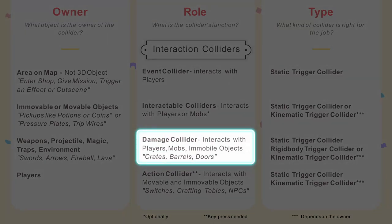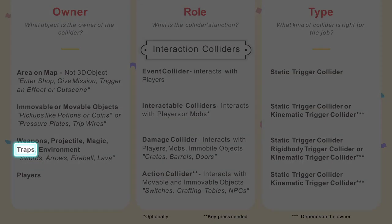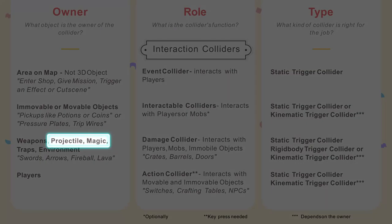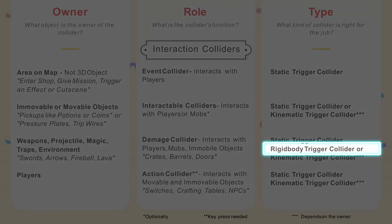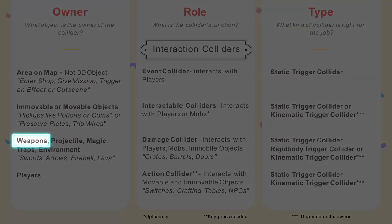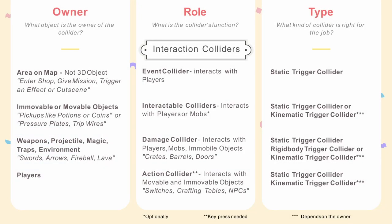Damage colliders interact with movable and immovable objects like players or mobs, but could also affect crates or even doors. They are attached to spike traps and can be static trigger colliders, or moving traps — missiles, fireballs — which are kinematic trigger colliders. If you want physics to affect your missiles, rigid body colliders could also be used. Naturally, players' or mobs' melee weapons, including claws and bite attacks, are also in this category.